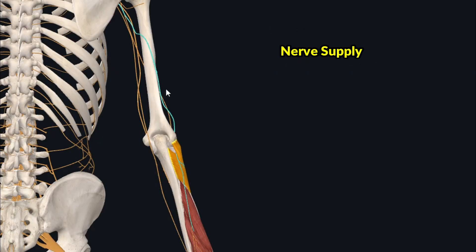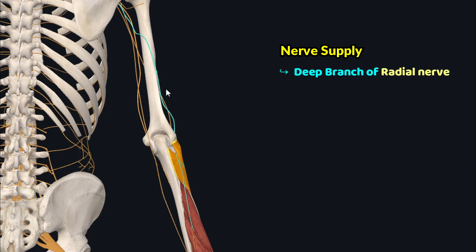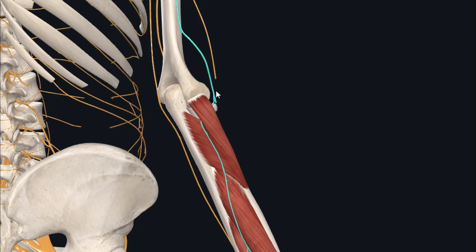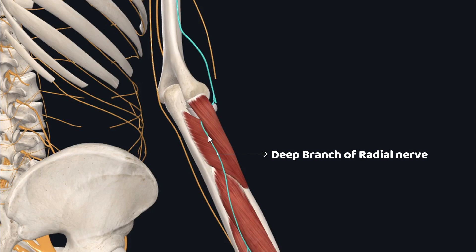All these deep muscles of the posterior compartment of the forearm receive their nerve supply from the deep branch of the radial nerve, which is also called the posterior interosseous nerve of the forearm. In the lateral view of the forearm, you can see the radial nerve giving off the deep branch — the posterior interosseous nerve — which supplies almost all the posterior muscles of the forearm.